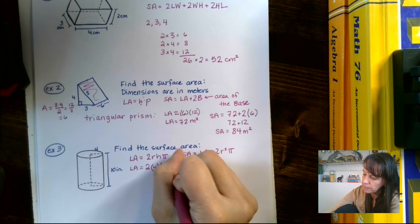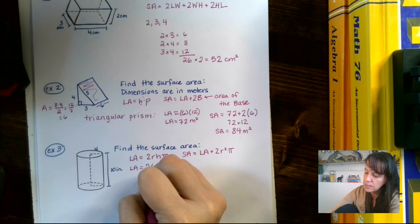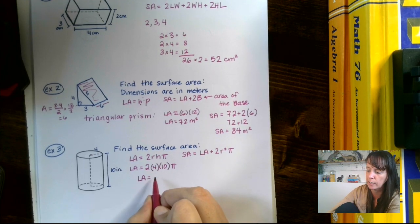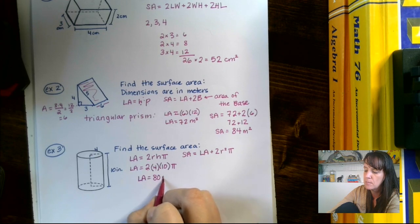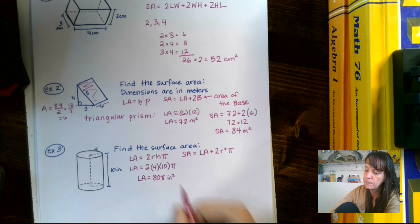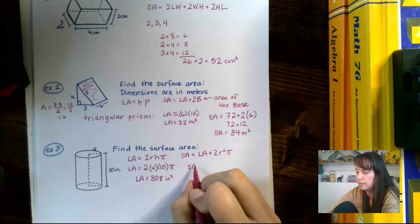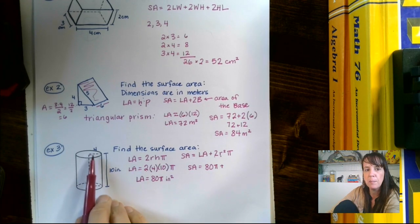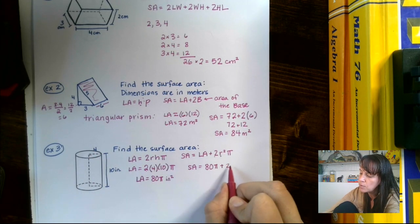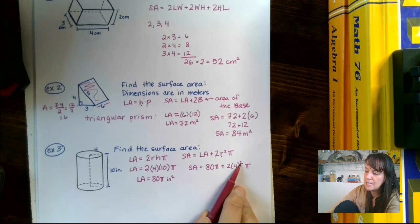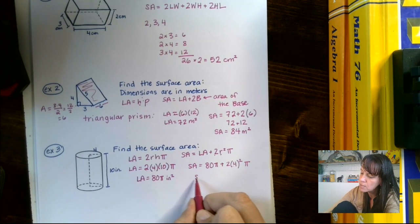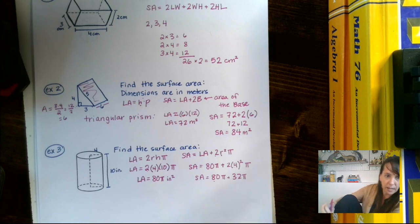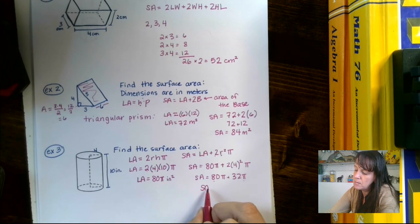So that's 10, and we multiply by pi. I'm going to leave this in terms of pi rather than multiplying by 3.14, because that gives a more accurate answer. 2 times 4 is 8, times 10 is 80 — so 80 pi inches squared for the lateral area. Now to find the surface area, we take that lateral area of 80 pi plus 2 times the radius squared. Our radius is 4, so 4 squared is 16, and 2 times 16 is 32 pi.